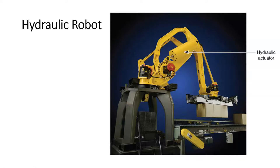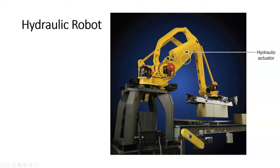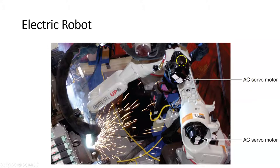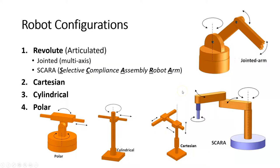Let's look at some pictures of different robots. A hydraulic robot is typically very large — you can see the hydraulic actuator, a big piston filled with oil. These robots can lift very heavy equipment but tend to be messy in industrial environments due to oil leakage, which is why they're not used in clean rooms or food applications. The electric robot uses an AC servo motor, providing that closed loop feedback so the robot always knows where it is. The robot we use in our classroom is an electric robot.